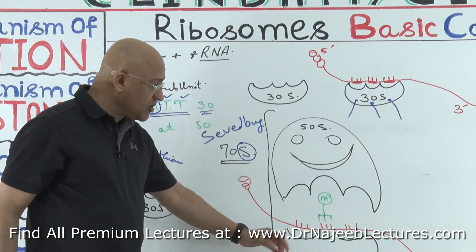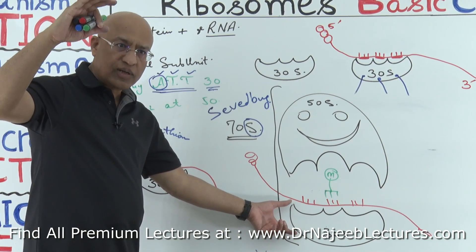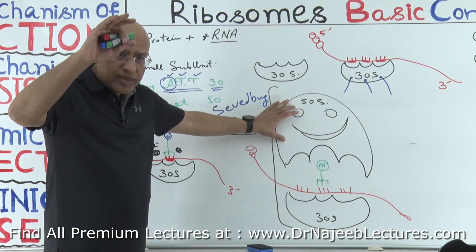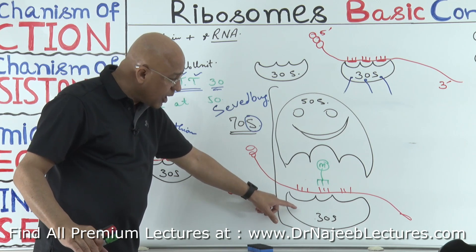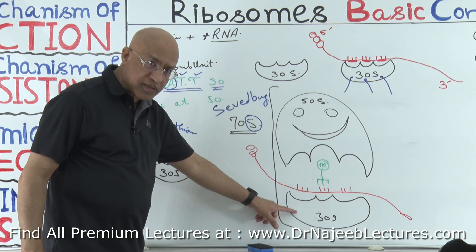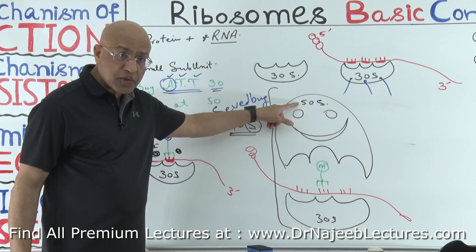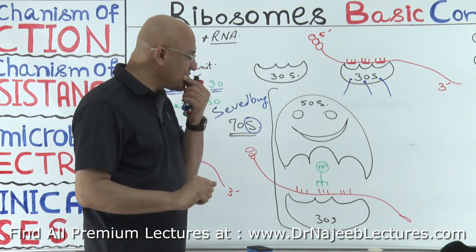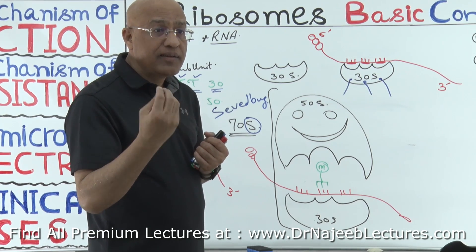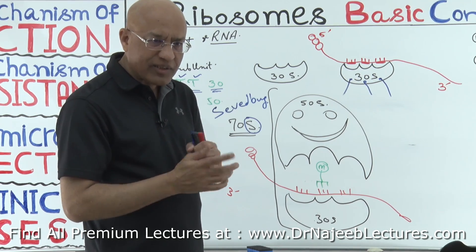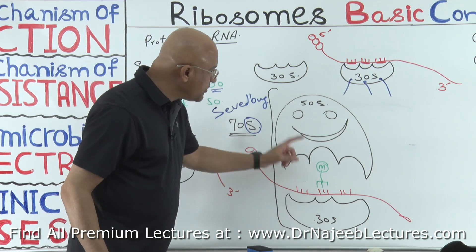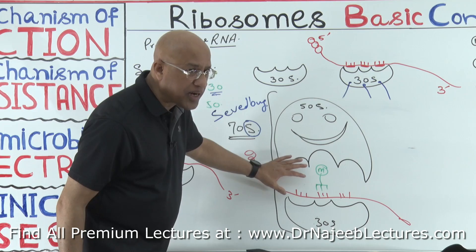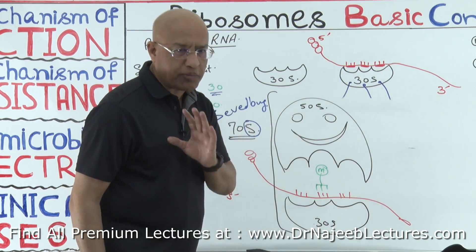When alone, the small subunit sediments at 30 Svedberg units and the large subunit sediments at 50 Svedberg units. But when they unite together — 30S plus 50S — they sediment at 70 Svedberg units. So remember: do not add 50 to 30 to make 80. It is 70S. And we are talking about bacterial or prokaryotic ribosomes.